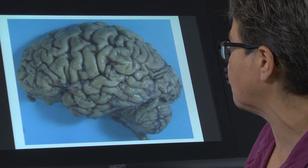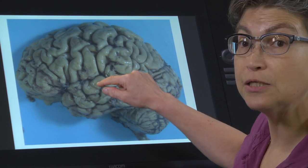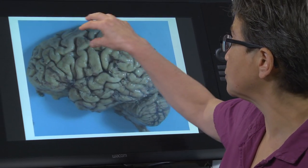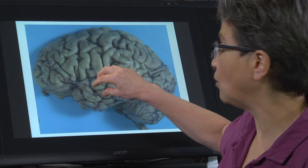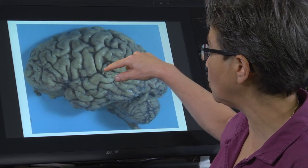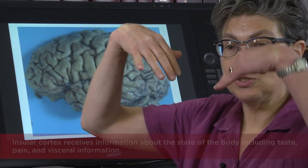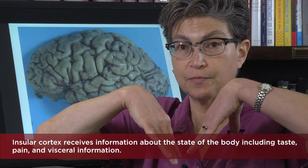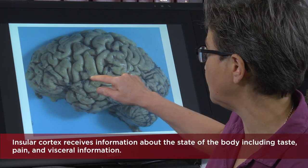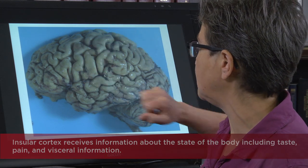Up here in the superior temporal gyrus is primary auditory cortex. So we have motor, somatosensory, visual, and auditory functions. People will also talk about the cortex contained deep within the sylvian fissure, which is called the insular lobe — not visible here. Here's the sylvian fissure, and the cortex on either side of that is called the insular lobe.